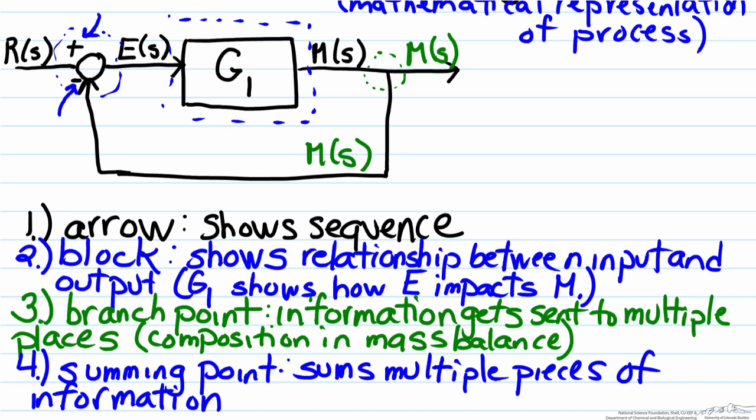If we look at our block diagram here, from this summing point, E(s) going out equals R(s) with a positive sign, because there's a positive there, minus M(s). M(s) is the signal entering this summing point, and it is a subtraction.